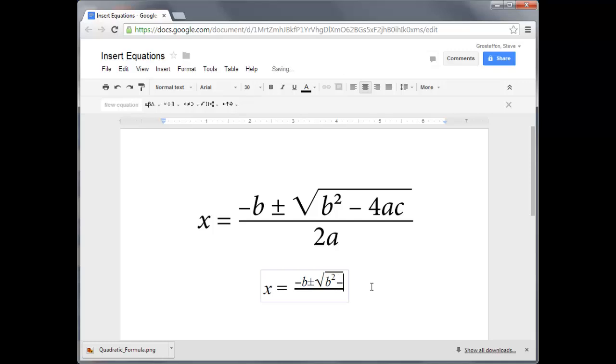Then subtract 4ac. Now that we're done with the radicand, the part underneath of the radical, we press enter to exit the radical.